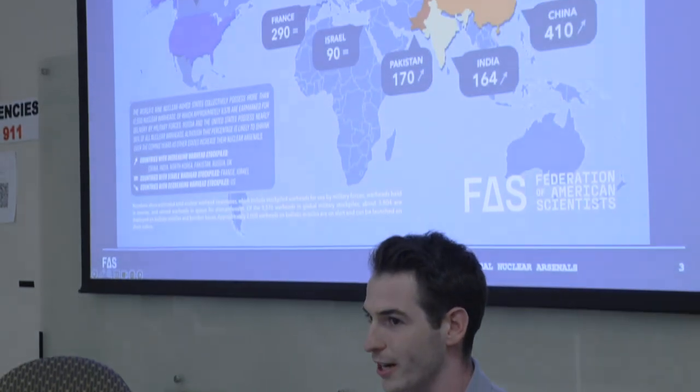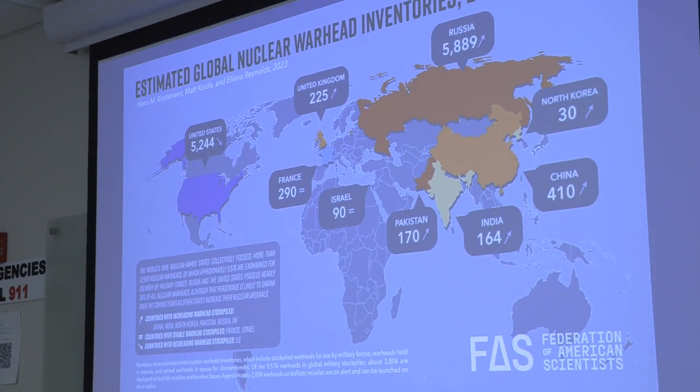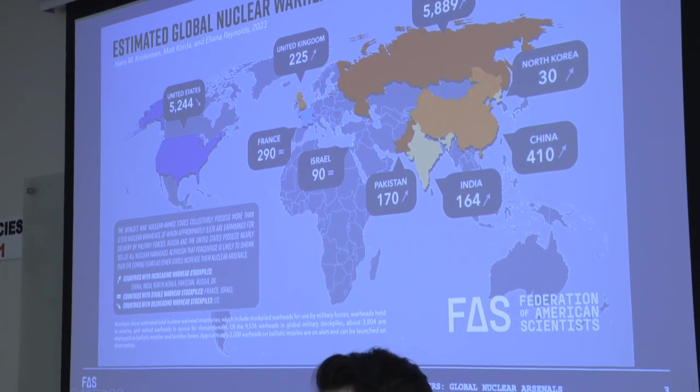Factors driving differences in nuclear transparency include history, governance, rule of law, the role of civil society, public discourse, and having a robust media. It takes a really long time for countries to develop a culture of nuclear transparency. Generally speaking — though this isn't always the case — democratic states tend to release more information about nuclear weapons, while more authoritarian states tend to release less.